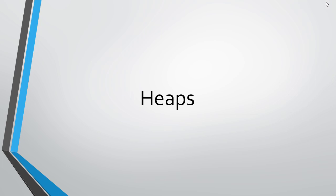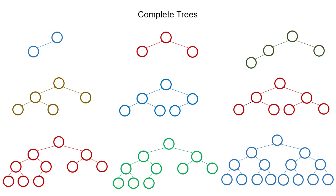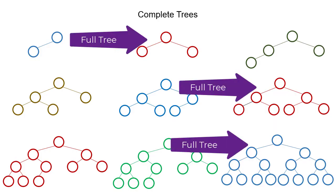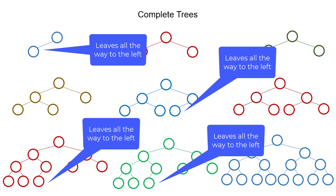In this video we're going to talk about heaps. All heaps are complete binary trees. What that means is the tree is full, meaning every non-leaf has the maximum number of children it can have up until the next-to-last level, and then all the leaves on the last level are all the way to the left.